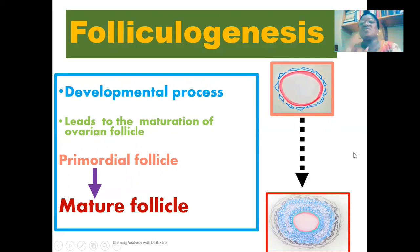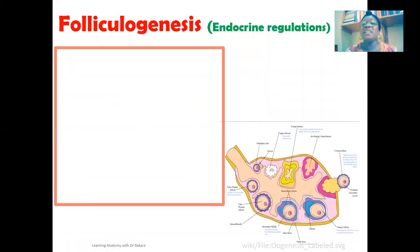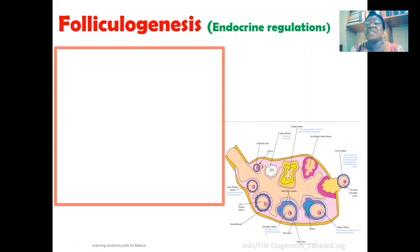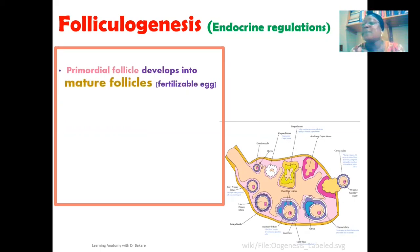Before we dive into the structural modifications that the primordial ovarian follicle undergoes before being transformed into a mature ovarian follicle, it's good for us to establish the hormonal stimulation behind this process. Folliculogenesis does not just occur spontaneously — there is an established endocrine-regulated process that must occur before this transformation is initiated.